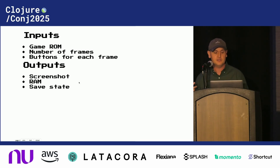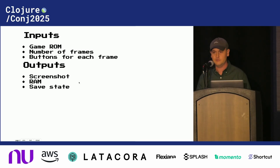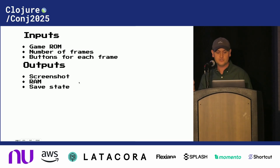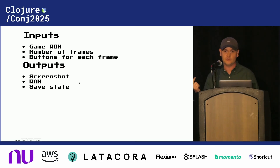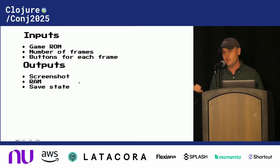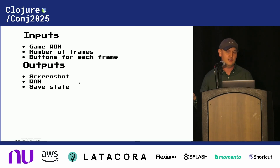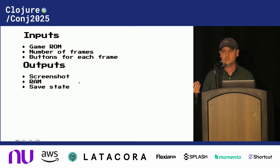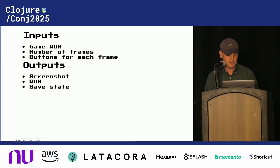The NES emulator also has a series of outputs that we'll use. For each frame, you get a screenshot, you get the RAM or memory — so if you know where to peek and poke, you can inspect the state of the game — and you also get a save state, which lets you quickly recreate whatever state you ended up in.